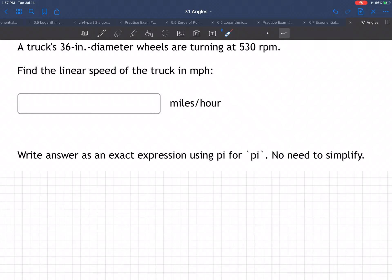Here we have an example of a truck with 36-inch diameter wheels turning at 530 RPM, that's revolutions per minute. Find the linear speed of the truck in miles per hour.